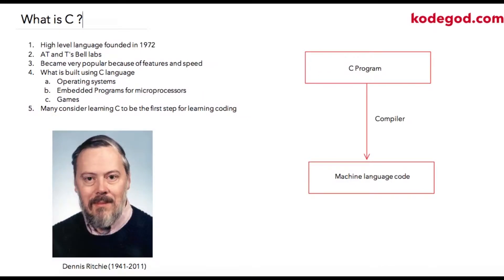So what is C? C is a high-level language founded in 1972 at AT&T's Bell Labs. It was founded by Mr. Dennis Ritchie. C became very popular because of its large feature list and speed.